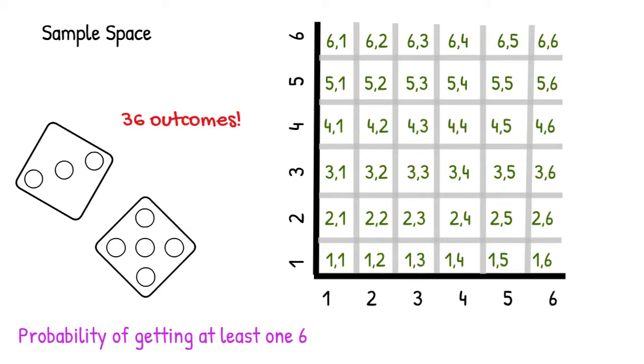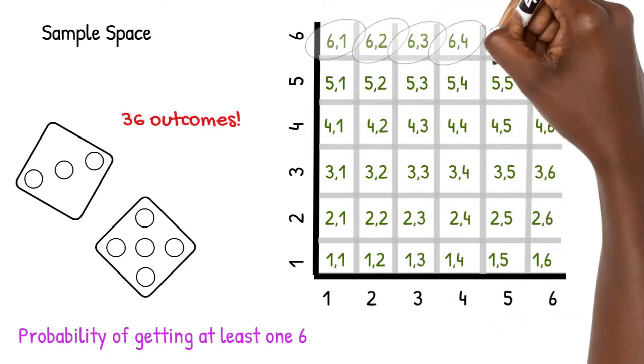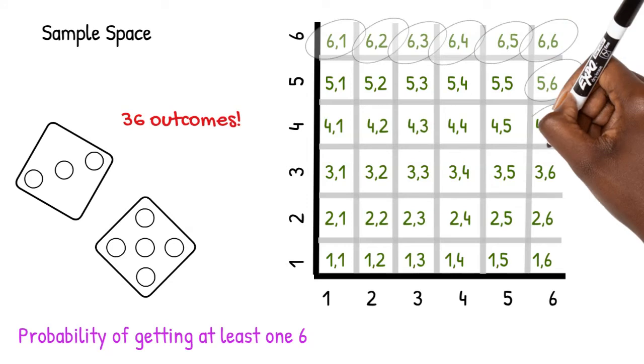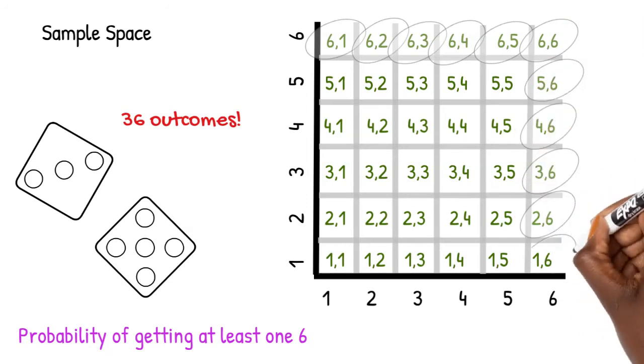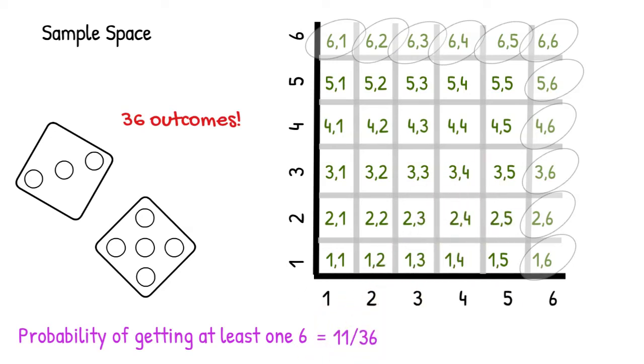We can go into our sample space and circle all outcomes that have at least one six. One, two, three, four, five, six, seven, eight, nine, ten, eleven. Eleven outcomes have at least one six. Eleven out of thirty-six, the total number of outcomes in our sample space.